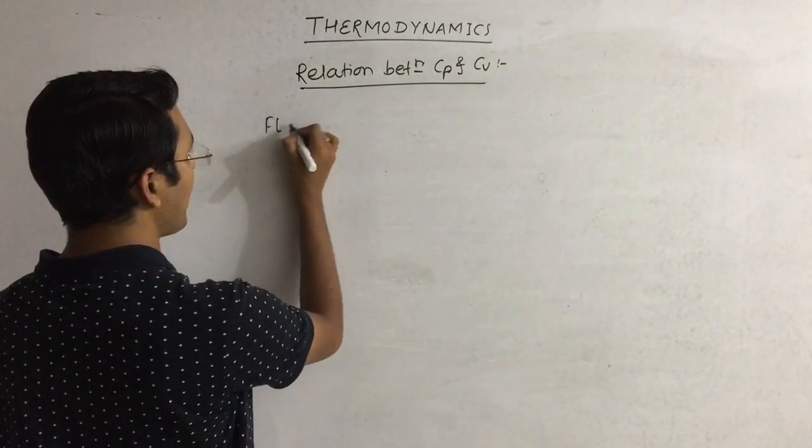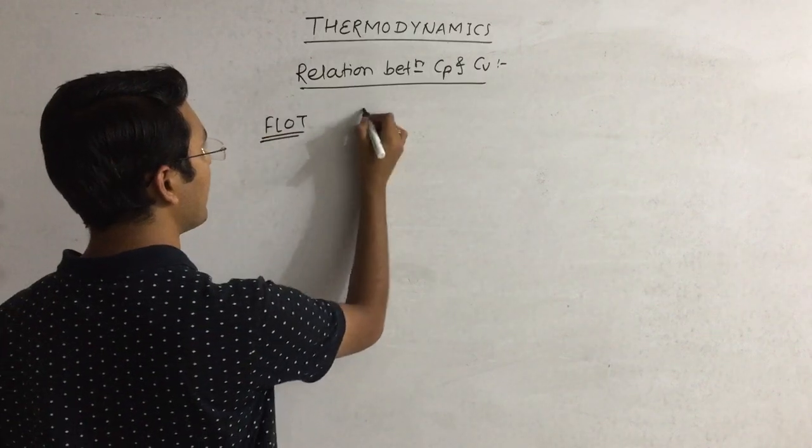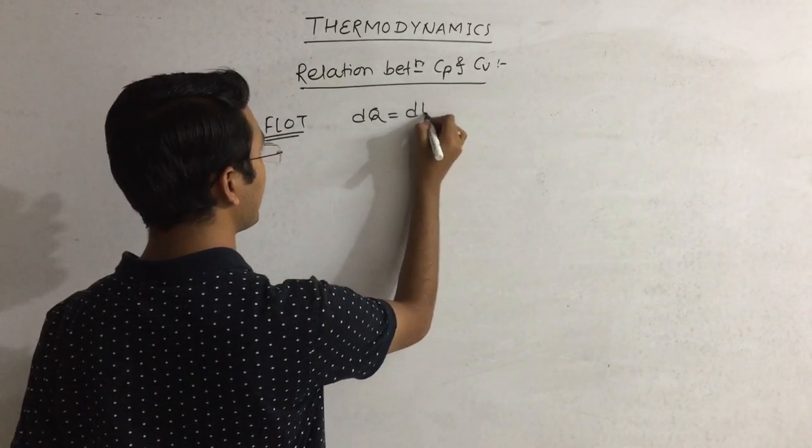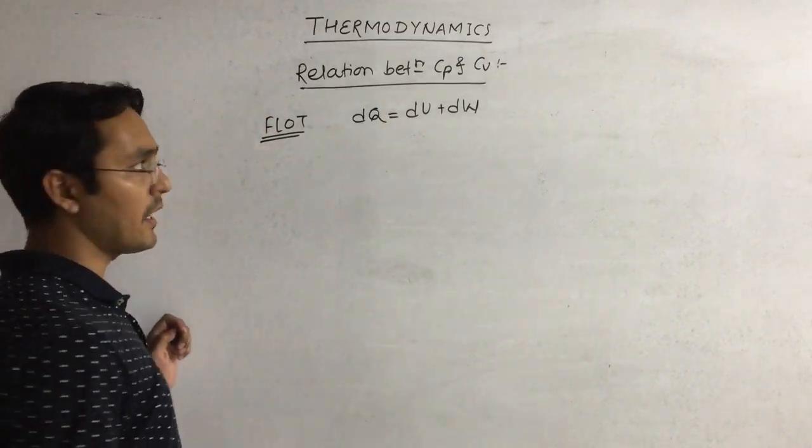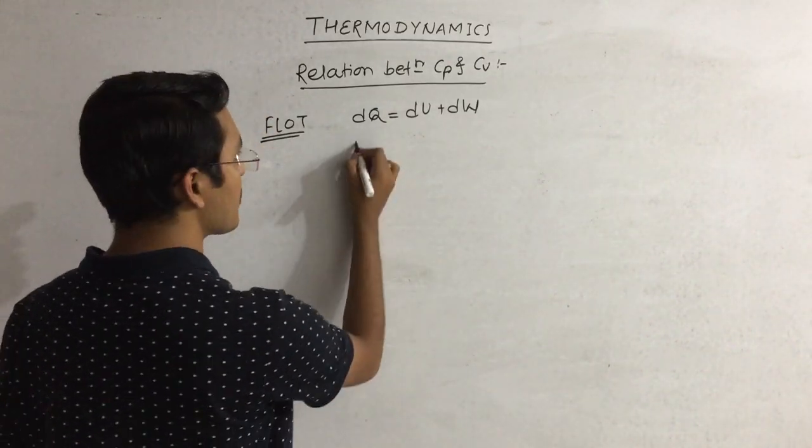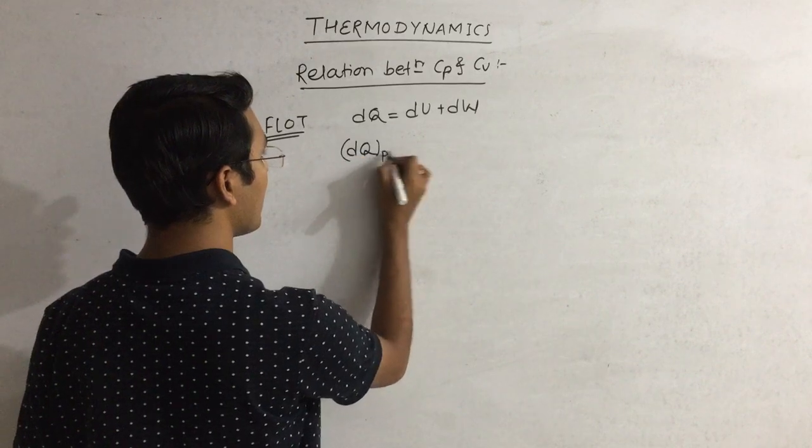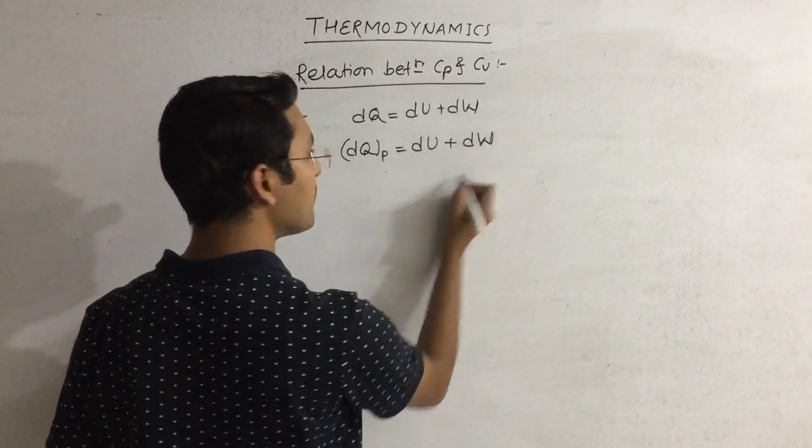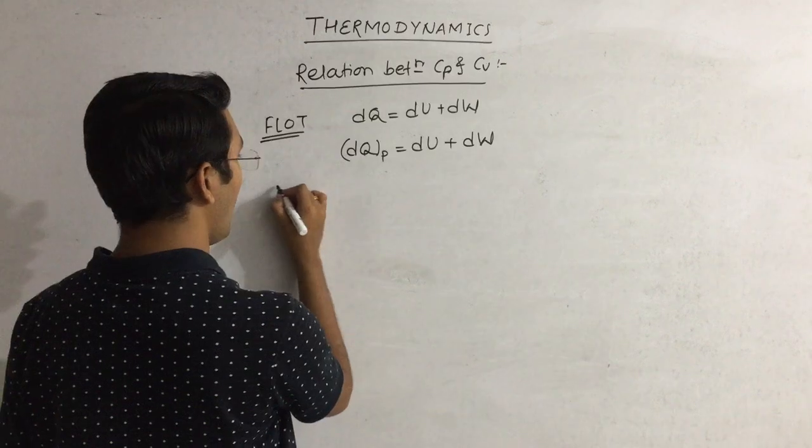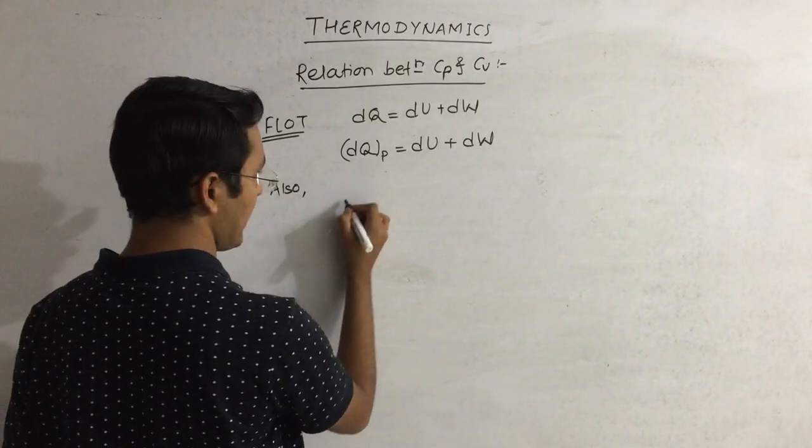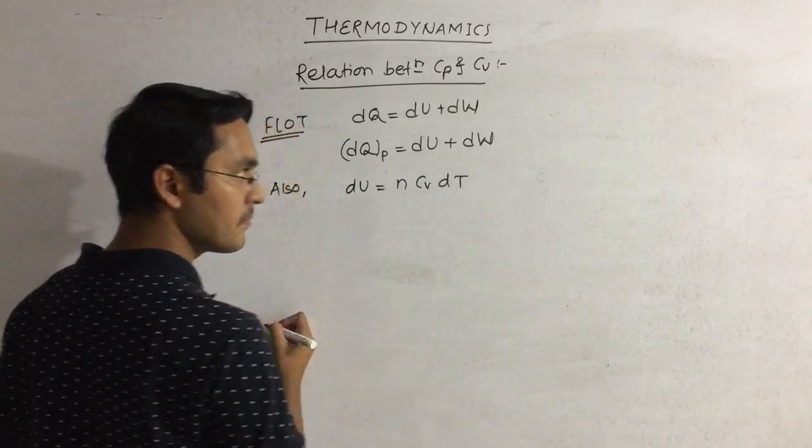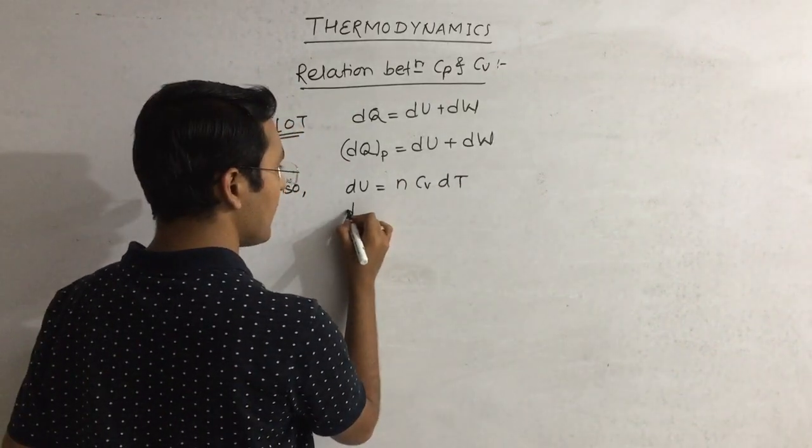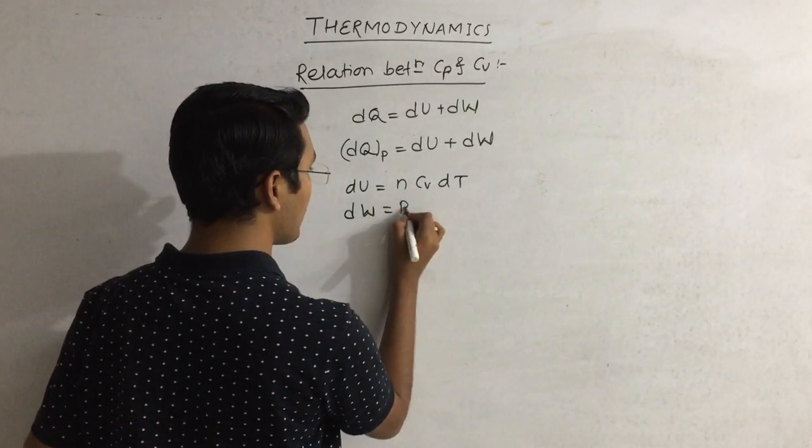We know that FLOT is equal to dq equals du plus dw. Suppose heating is done at constant pressure, so dqp is equal to du plus dw. Also, from the last lecture, du is equal to n Cv dT, and dw would be equal to P dV.